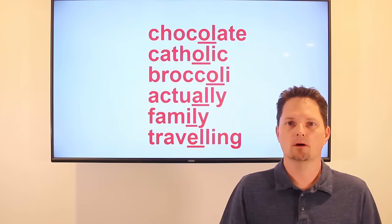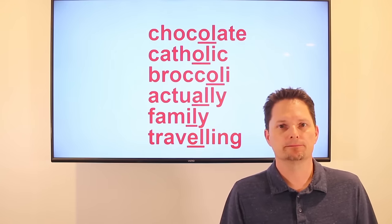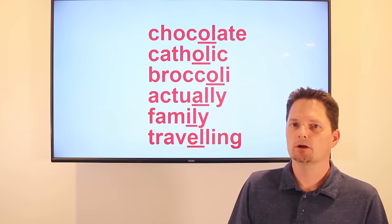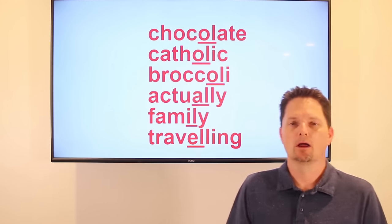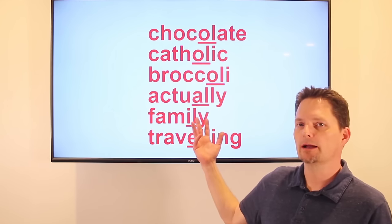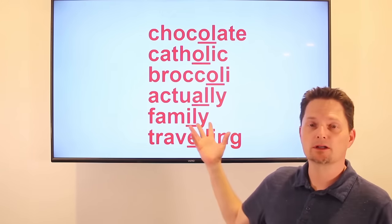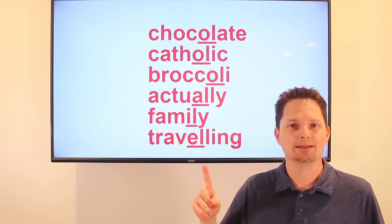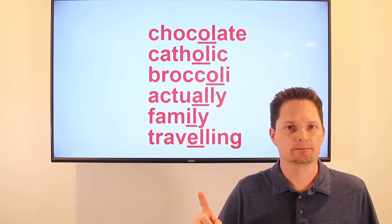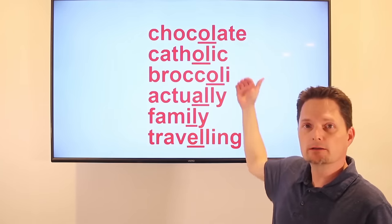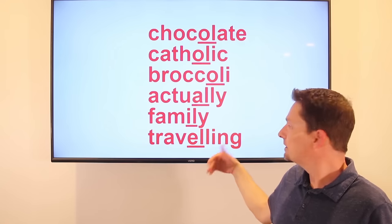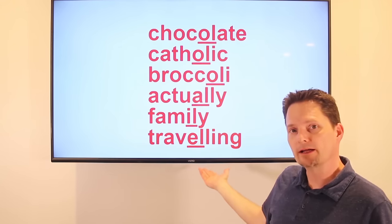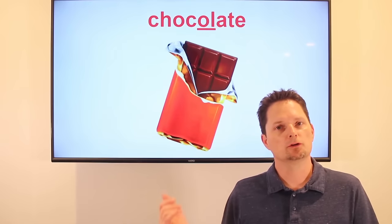Hello, welcome to English for Everyone. Today we're looking at some words that have a silent syllable — they look like three or four syllables, but one syllable is silent. Let's look at each one. Example: chocolate.